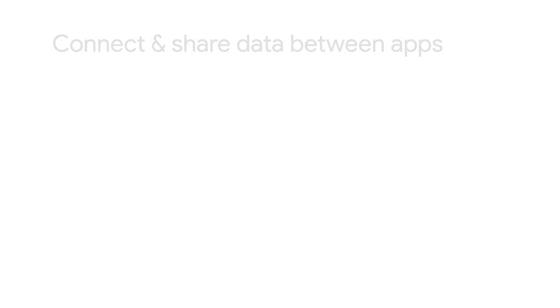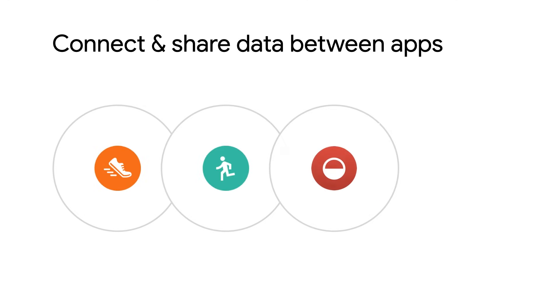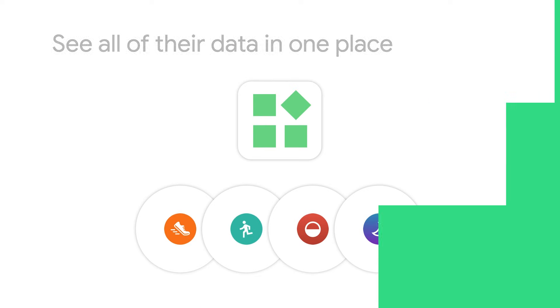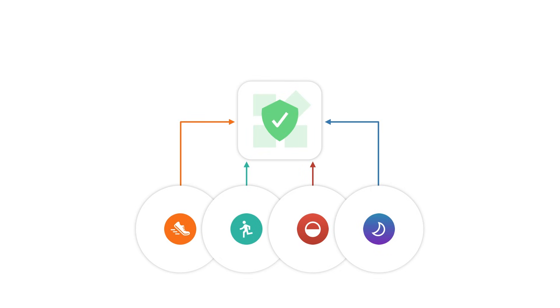Wouldn't your users love the deeper insights you could offer if you could connect all the data that is meaningful to them? HealthConnect enables them to simply connect and share data between apps. It enables users to manage and control their health and fitness data from a central location and stay in control of which apps are allowed to write and which apps are allowed to read various types of data.